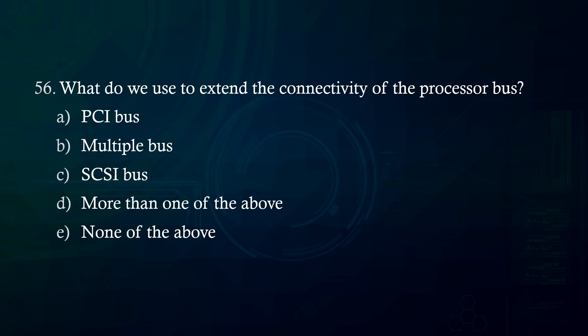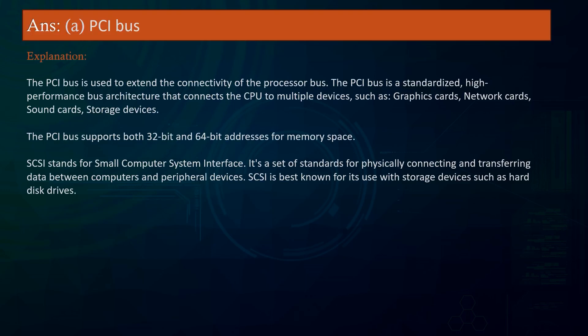What do we use to extend the connectivity of the processor bus? A. PCI bus B. Multiple bus C. SCSI bus D. More than one of the above E. None of the above. Answer: PCI bus. Explanation: The PCI bus is used to extend the connectivity of the processor bus. It is a standardized, high-performance bus architecture connecting the CPU to multiple devices such as graphics cards, network cards, sound cards, and storage devices. The PCI bus supports both 32-bit and 64-bit addresses. SCSI (Small Computer System Interface) is a set of standards for connecting and transferring data between computers and peripheral devices, best known for use with hard disk drives.